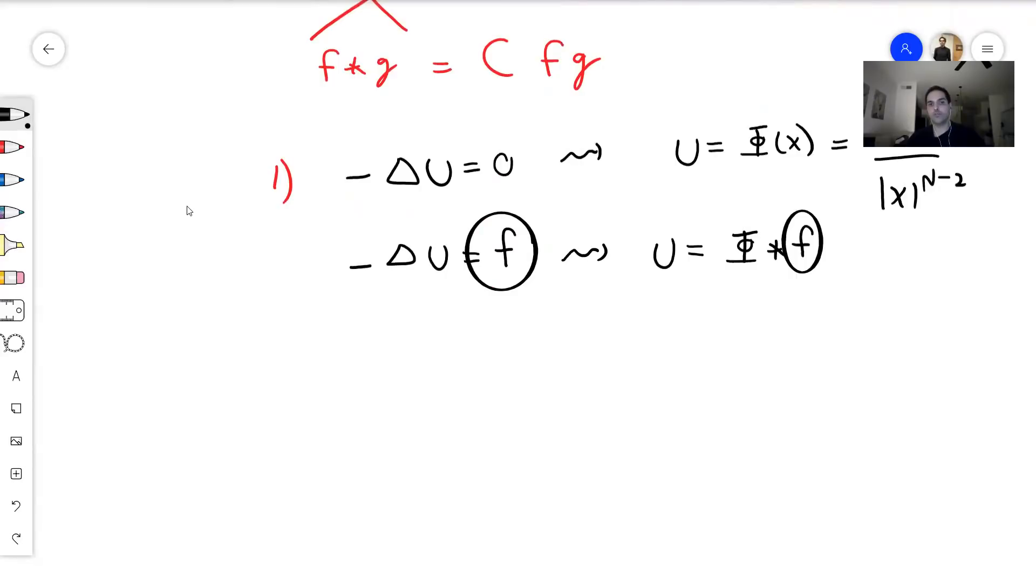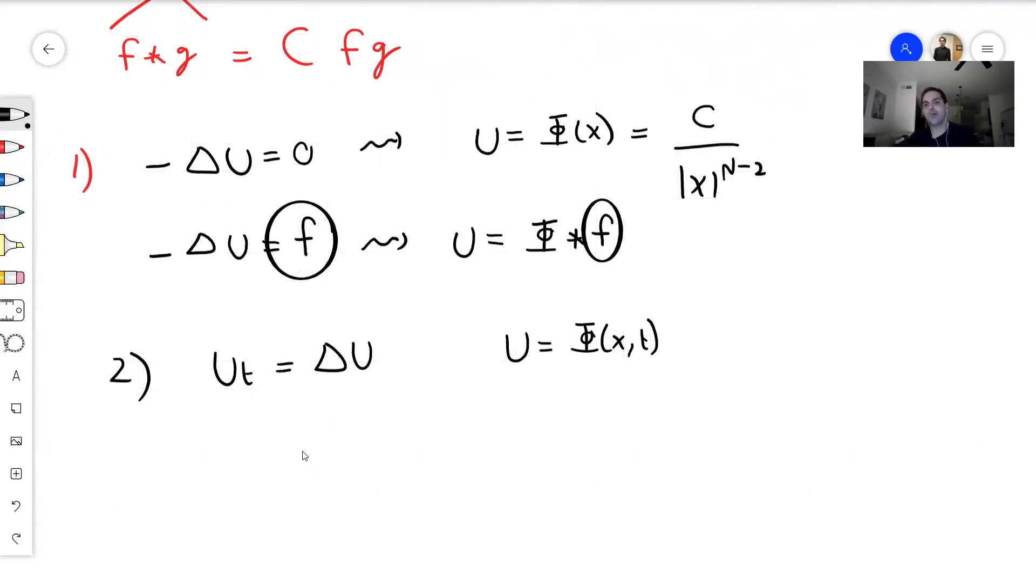Another reason why it's useful, if you're taking the heat equation, u_t equals Laplace of u, then again, you have a fundamental solution. And this I think I remember because it was on my qual. So 1 over (4πt)^(n/2) e to the minus |x|^2 over 4t, something like that. Anyway, the Gaussian distribution.